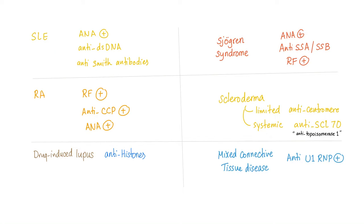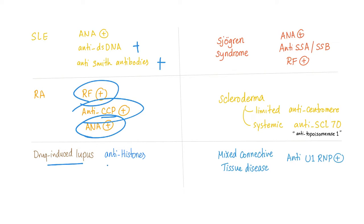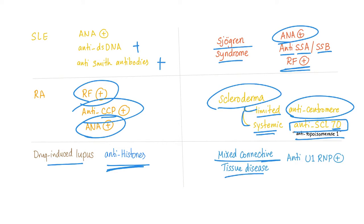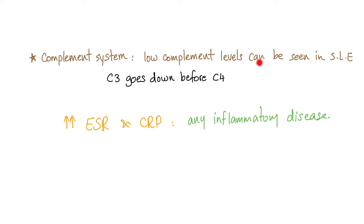Brief summary of key markers: Lupus — positive ANA, positive anti-double-stranded DNA, positive anti-Smith antibody. Rheumatoid arthritis — positive rheumatoid factor, positive anti-CCP, and positive ANA. Drug-induced lupus — positive anti-histone antibodies. Sjogren's syndrome — positive ANA, positive anti-SSA and anti-SSB, and positive rheumatoid factor. Scleroderma has two types: limited scleroderma has anti-centromere antibody; systemic sclerosis has anti-scleroderma-70 or anti-topoisomerase 1. Mixed connective tissue disease has anti-U1 RNP. You don't need all of these to make the diagnosis — it's all about pattern recognition.